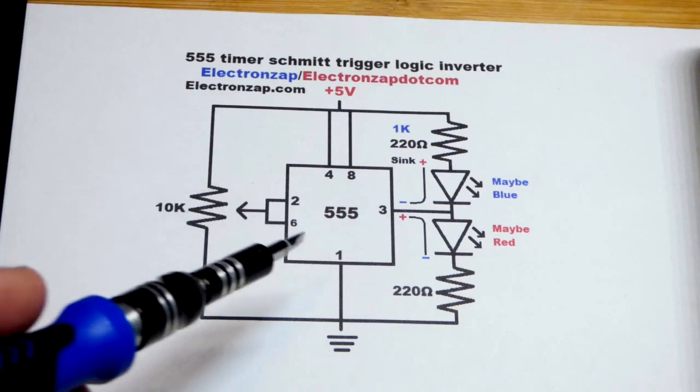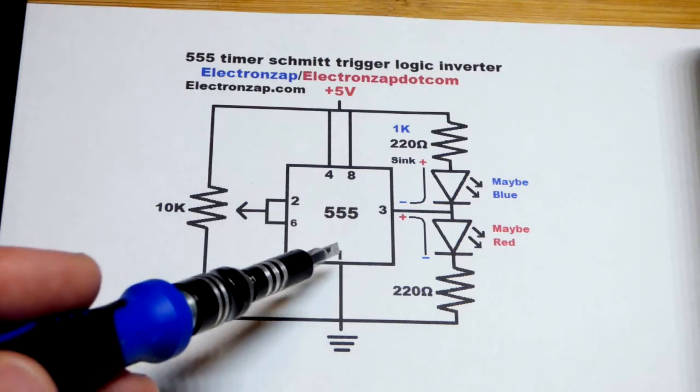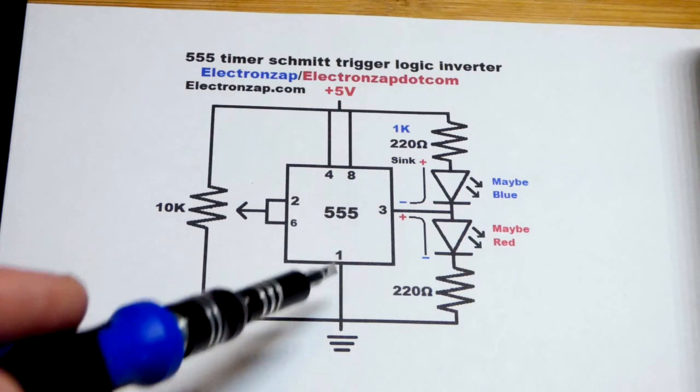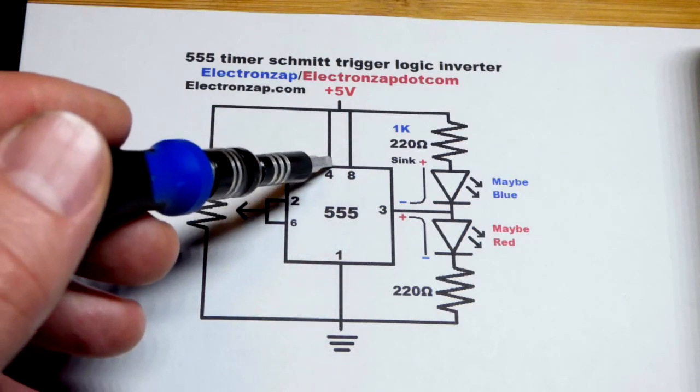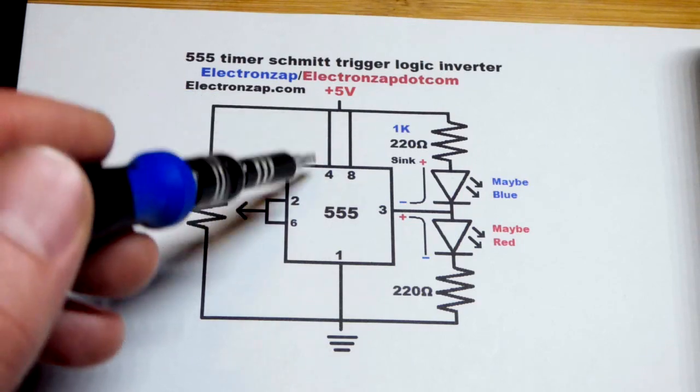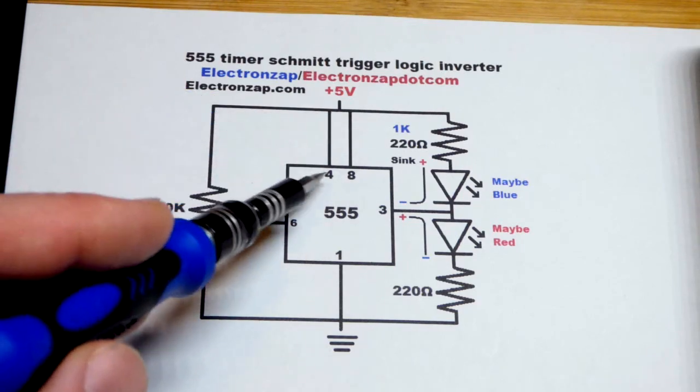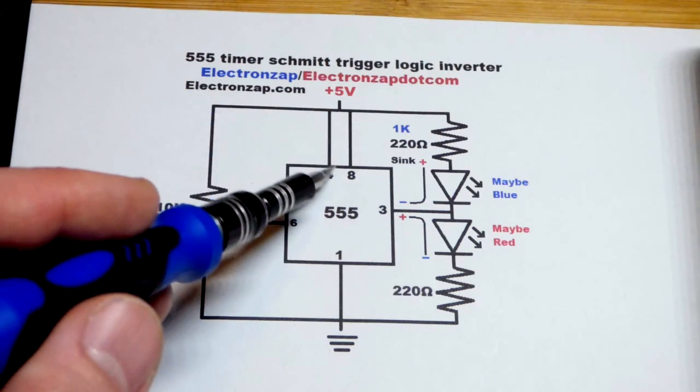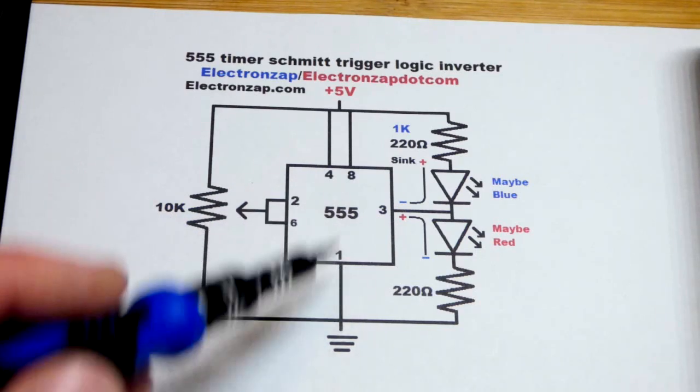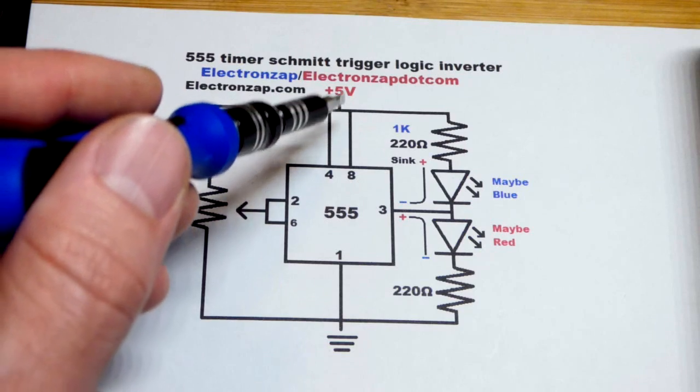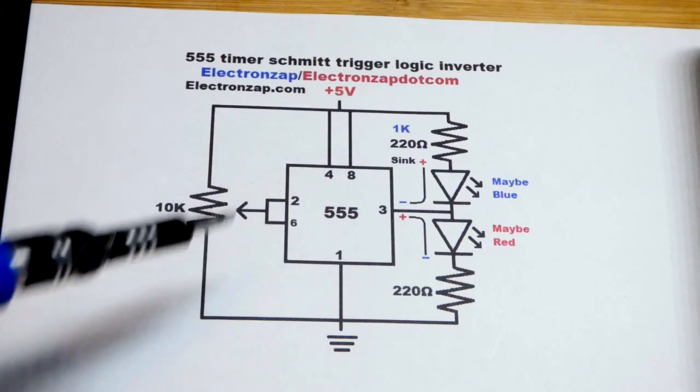Now, we have to power the integrated circuit, and so pin number one goes to the negative side of the supply, pin number eight to the positive. We also have pin four going directly to positive, that's the reset pin. We do not want it to do anything, and it's waiting for a low signal. But you put it directly to the positive supply, it makes it so it doesn't do anything.